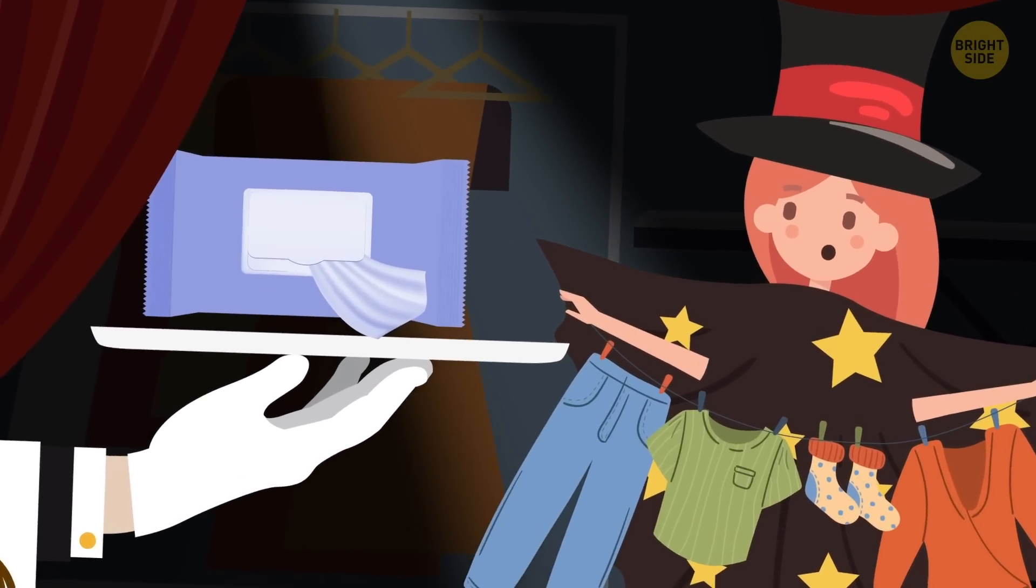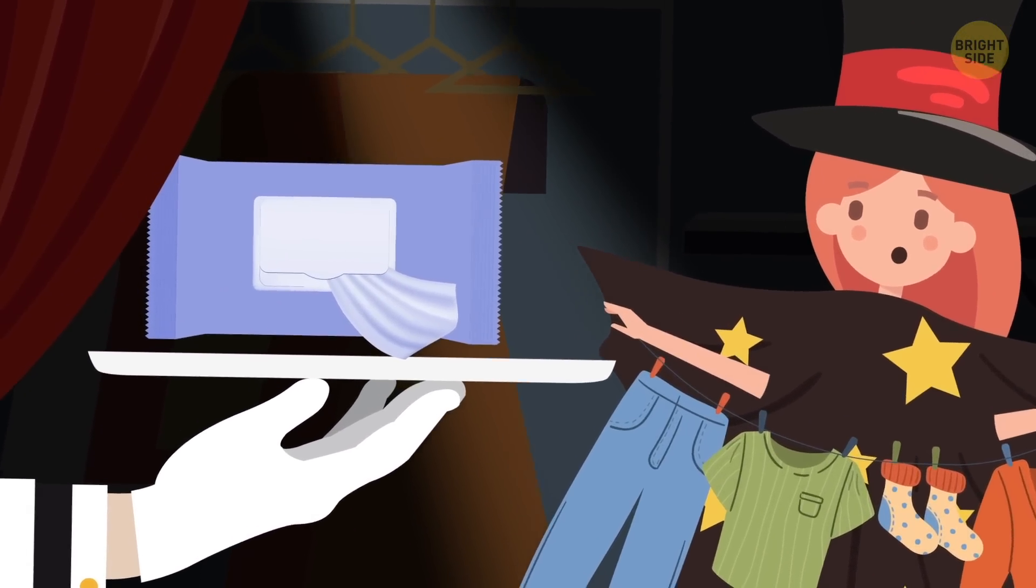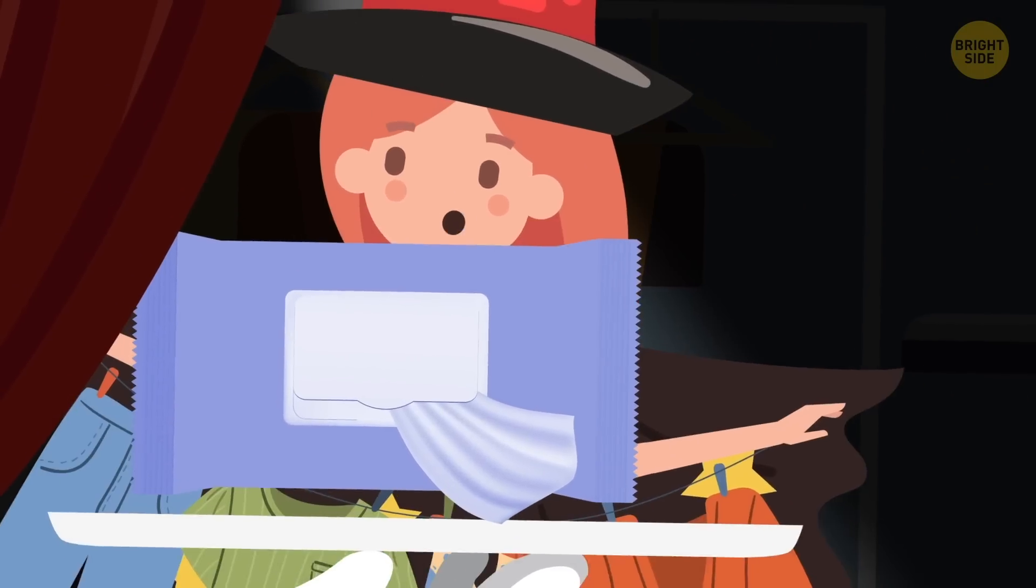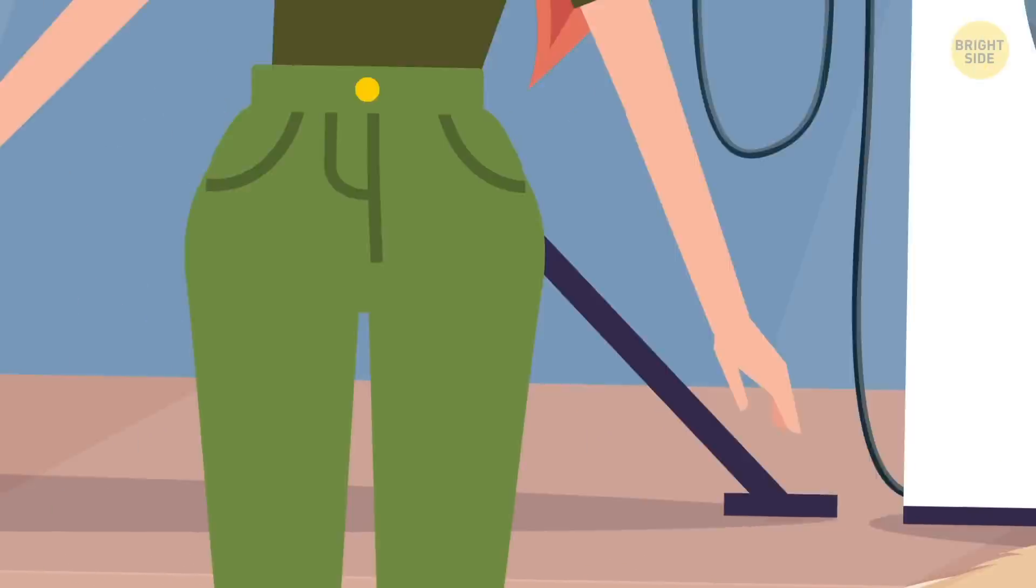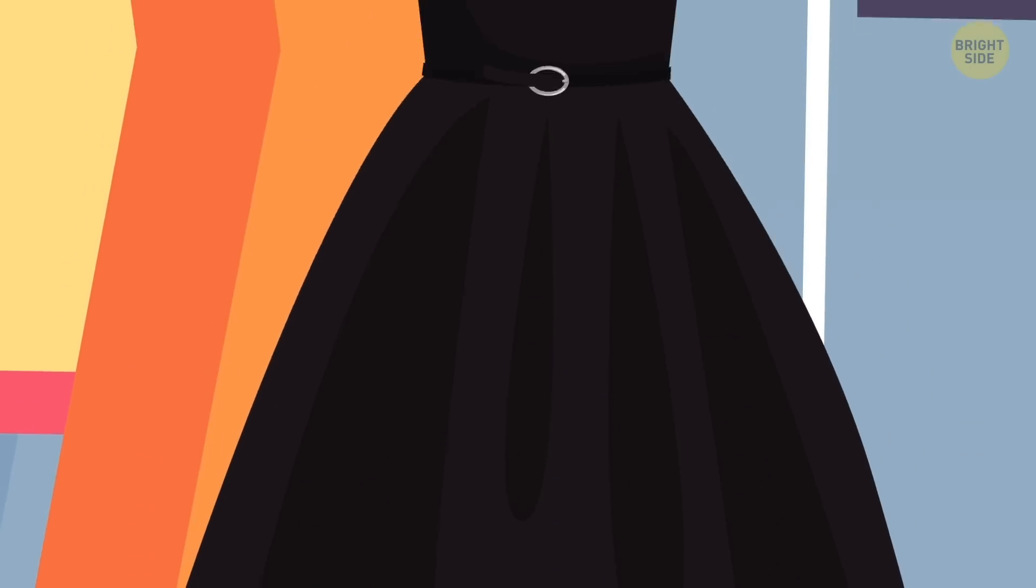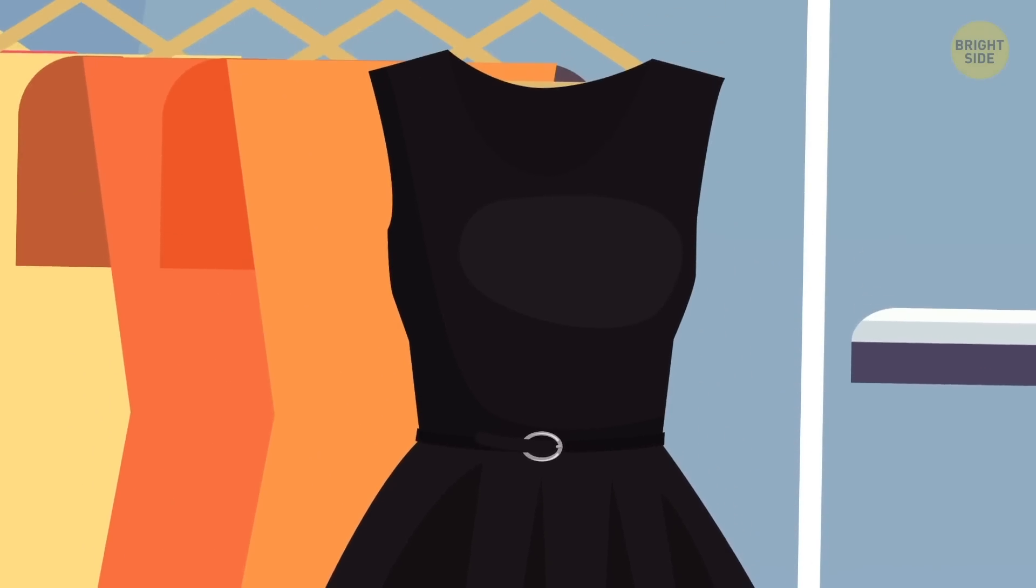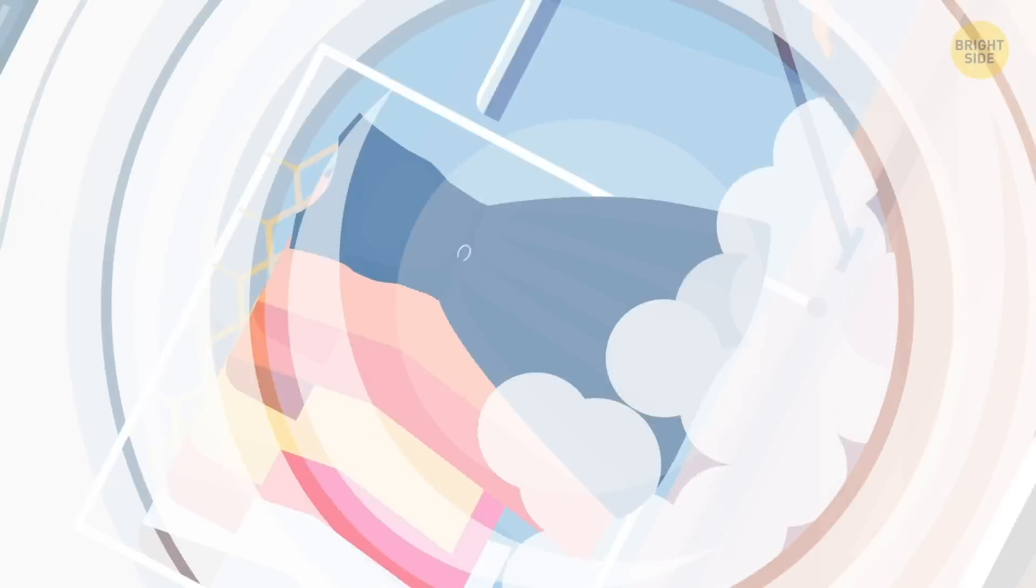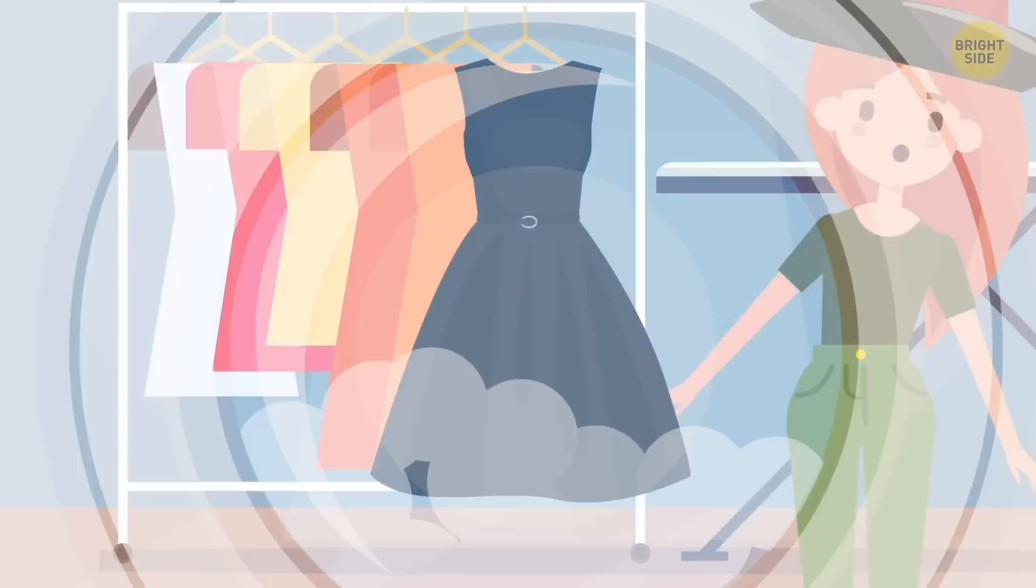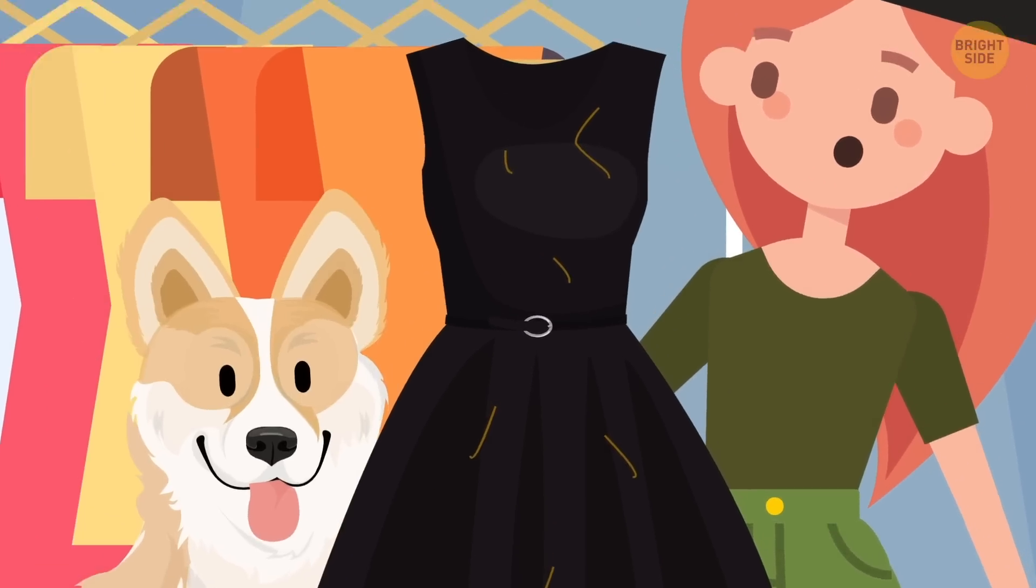For example, I always put wet wipes into the washing machine before stuffing my clothes inside, and I do it for a reason. If you have a pet or love dark clothing, you're definitely familiar with this irritating problem. You put your squeaky clean clothes out of the washing machine, and what do you see? Right, they're covered in fluff and animal hair all over.